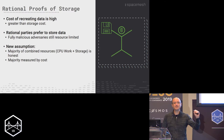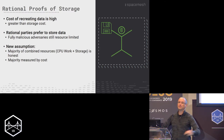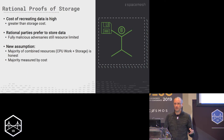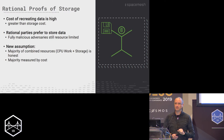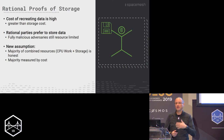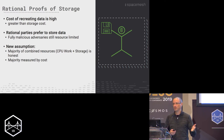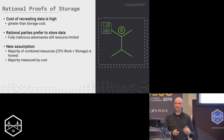Our assumption needs to be slightly changed. We can't just assume there's an honest majority of storage, because we said the adversary could do proof of work. So our assumption is now that this combination of storage and work — a majority — is controlled by honest parties. This is a reasonable assumption, just as believable as an honest majority of storage or work. It's the same flavor of assumption.